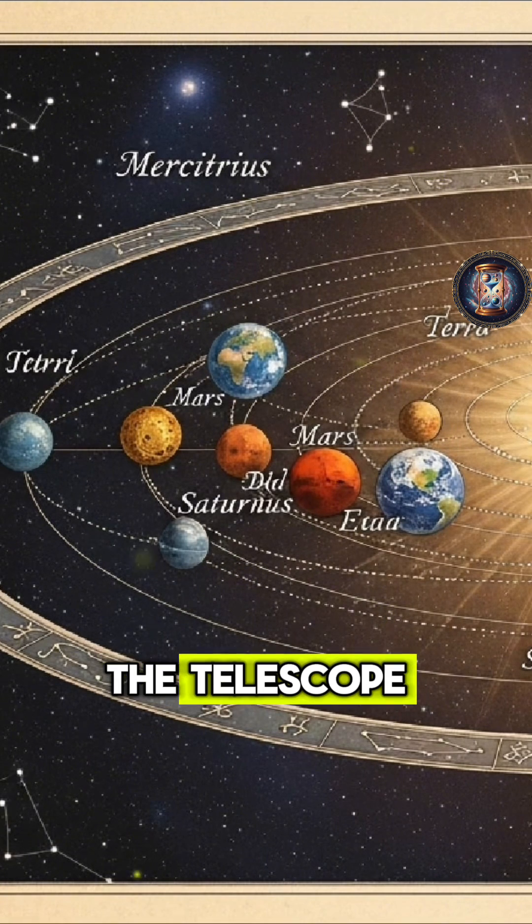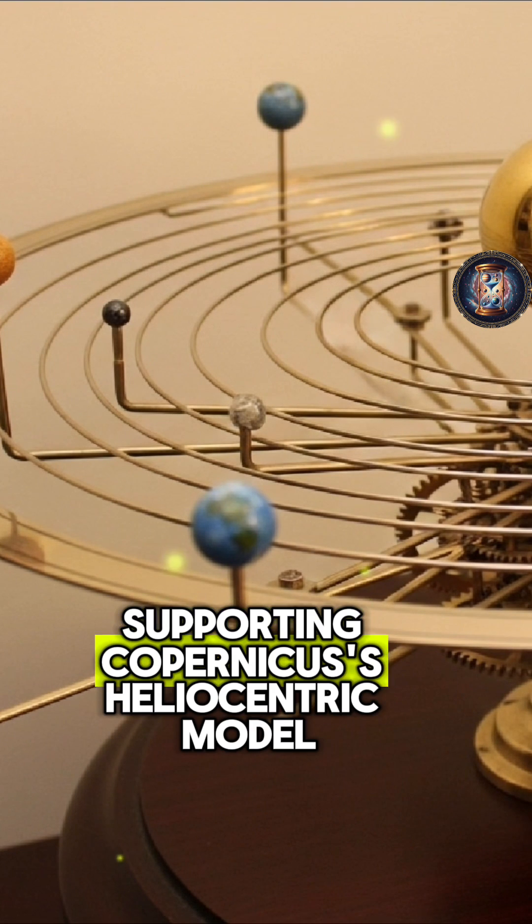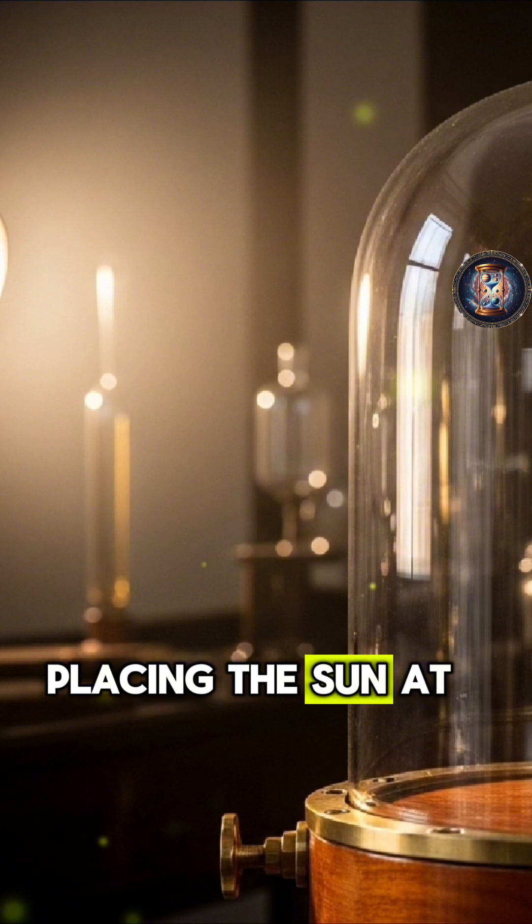With the use of the telescope, Galileo provided solid evidence supporting Copernicus's heliocentric model, placing the sun at the center.